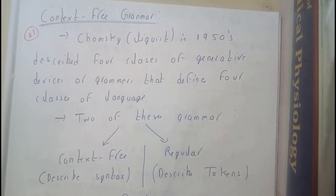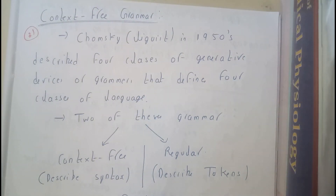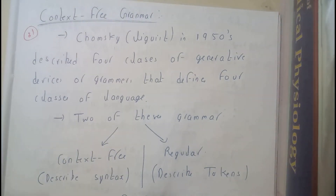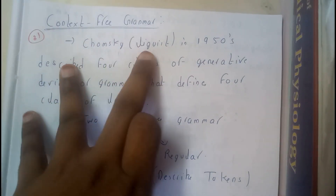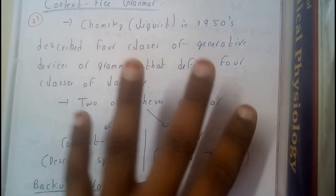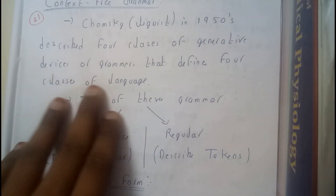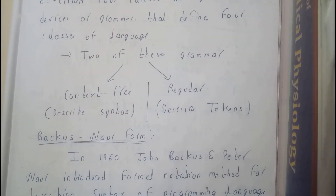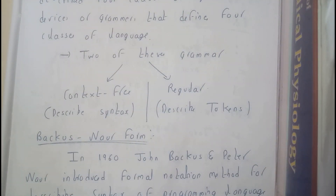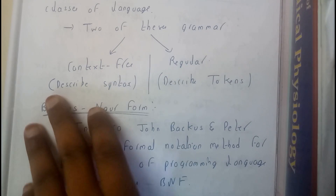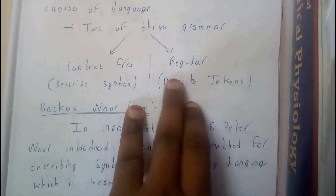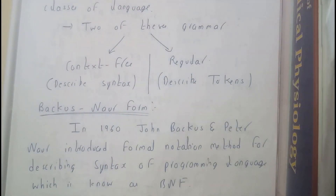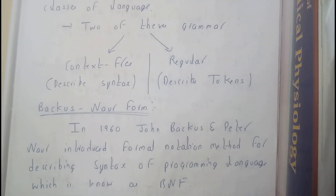Hello guys, we are back with our next tutorial. In this tutorial let us go through context-free grammar. This was discovered or described by Chomsky, a linguist in the 1950s, describing four classes for generative devices or grammar that defines four different classes for any language. Two of these grammars are in our syllabus: context-free grammar, which describes syntaxes, and regular grammar, which describes tokens.